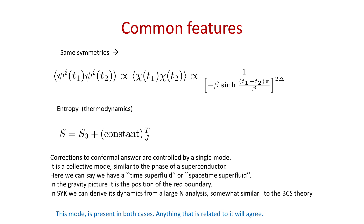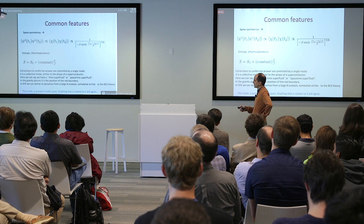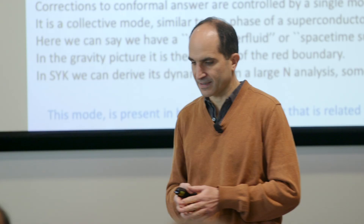The fact that we have certain symmetries implies that this type of correlation function has a form determined by the symmetries. The two models—the SYK and the black hole—have the same symmetries, and therefore this two-point function has a specific functional form determined by symmetry. Also, looking at the entropy or thermodynamics of the system, the entropy has a constant piece—also following from the symmetries—saying that the entropy is basically independent of temperature. That's the statement that the system is scale invariant.